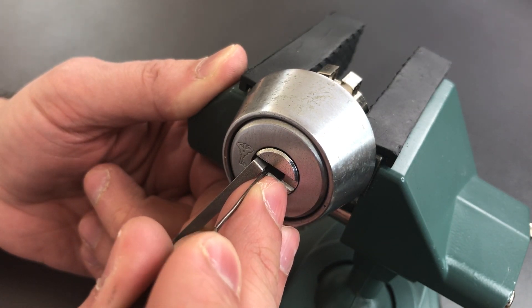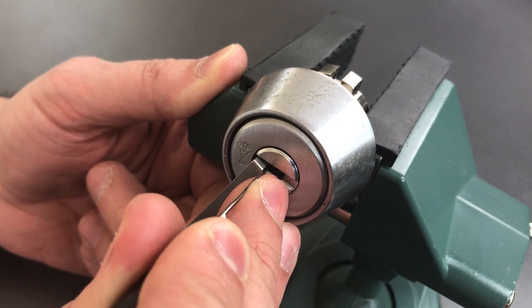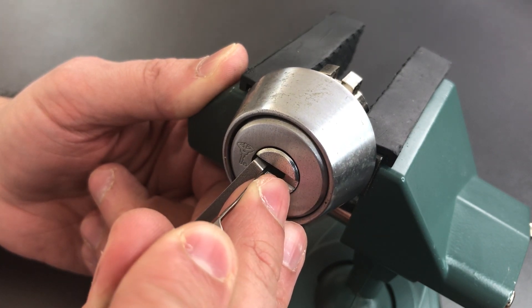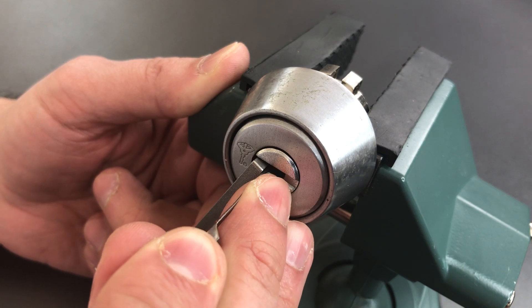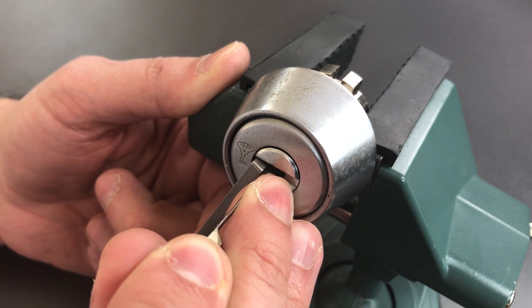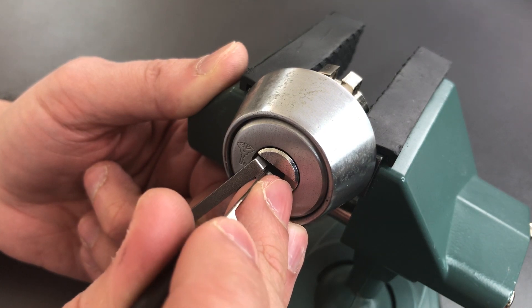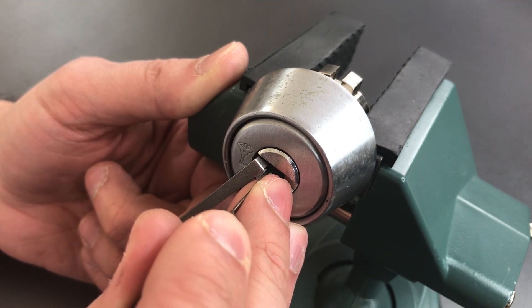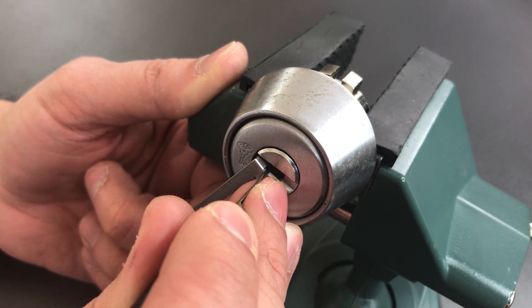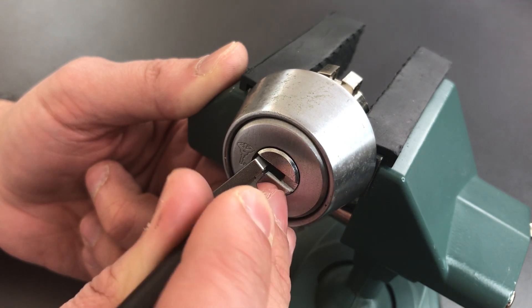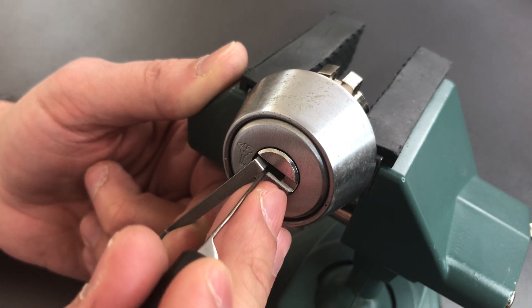Back to the beginning, nothing on the outer or inner pin on number two, counter rotation on the outer pin on two, and we got a deeper false set now, got a little click on the inner pin on three, nothing on four or five.